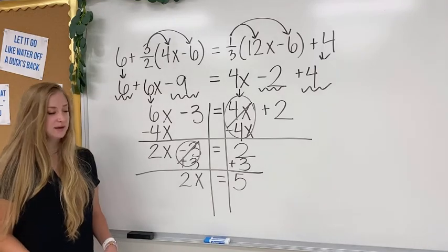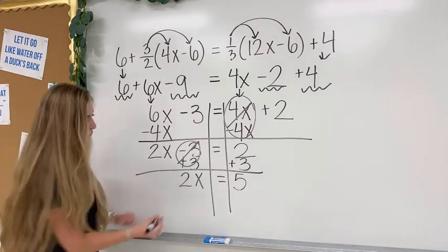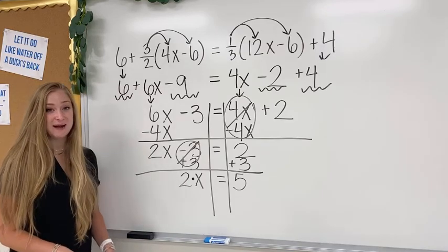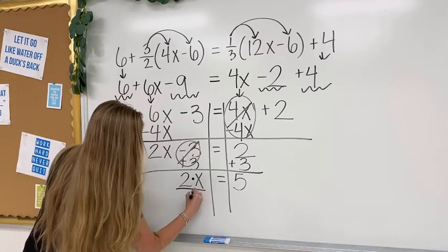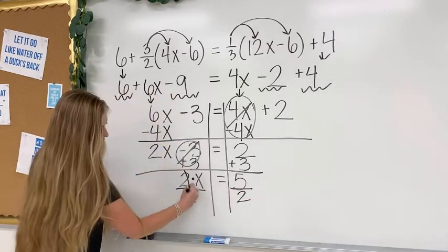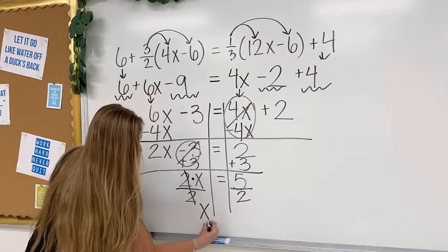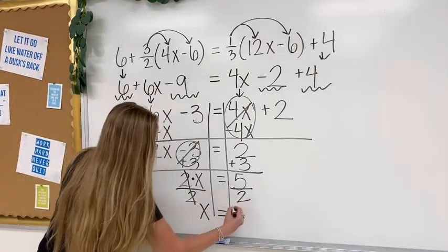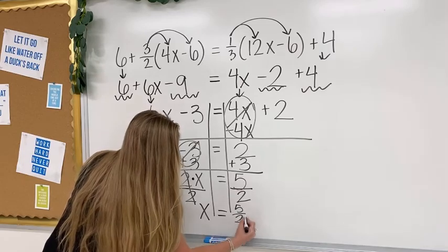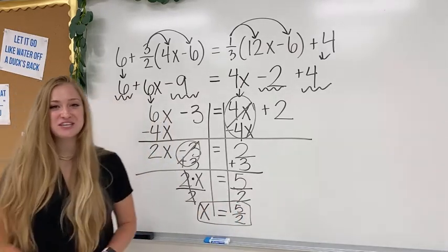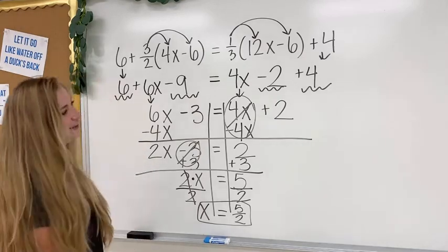Then the very last step is I see that this is 2 times x, and the inverse operation of multiply by 2 is divide by 2. Anything you do on one side, you have to do to the other. This would cancel out to give me 1x, which is what we wanted this whole time, and it's going to equal this fraction, 5 halves. It's okay that the answer is a fraction, as long as you know how to simplify.